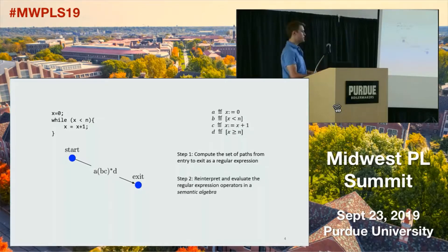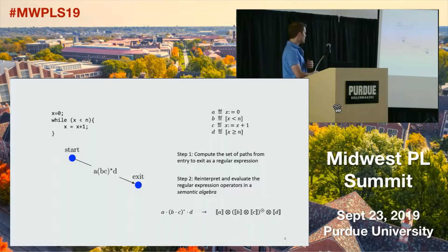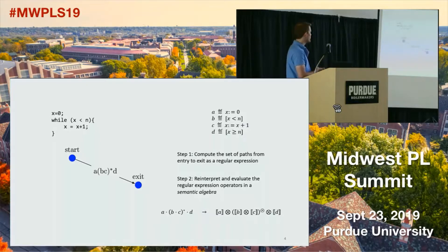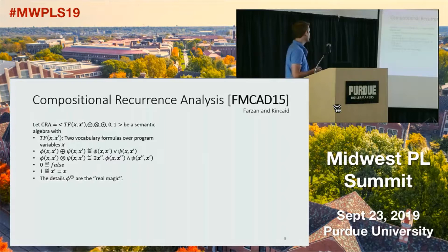Once we have the regular expression describing paths from start to exit, we reinterpret it using the operators of your semantic algebra. Normal regular expression operators — dot, choice, and star — get replaced. You take the individual interpretation for each instruction and evaluate using the operators defined for your semantic algebra. I'll now walk through a particular example of an algebraic analysis — the CRA domain — applied to that program.